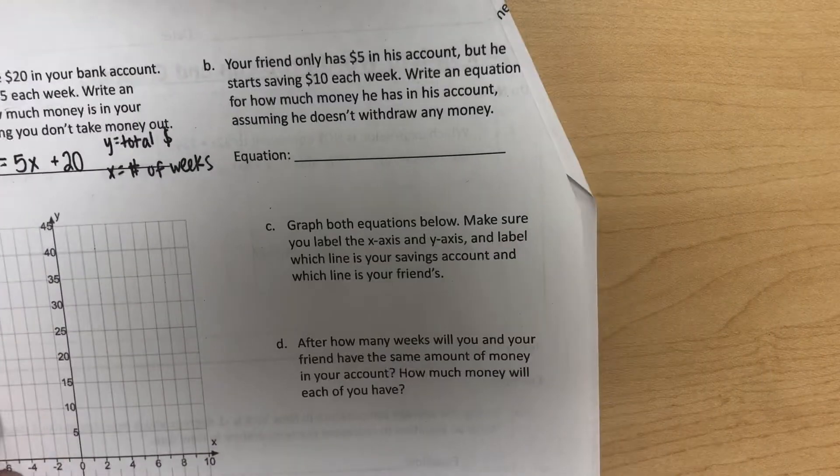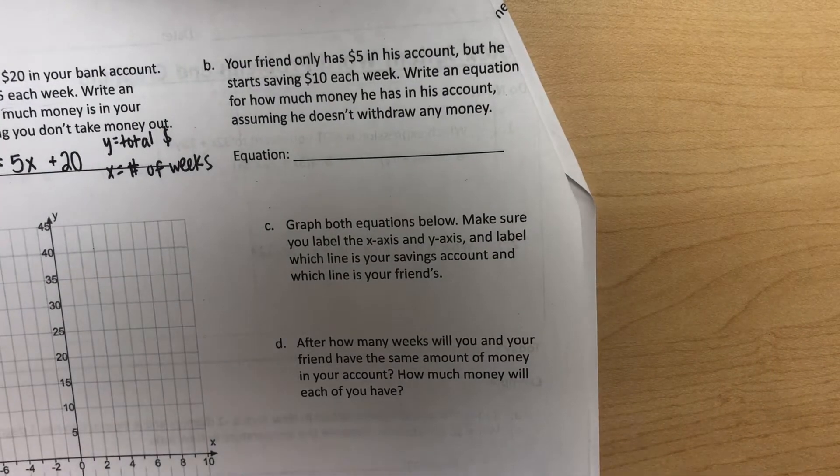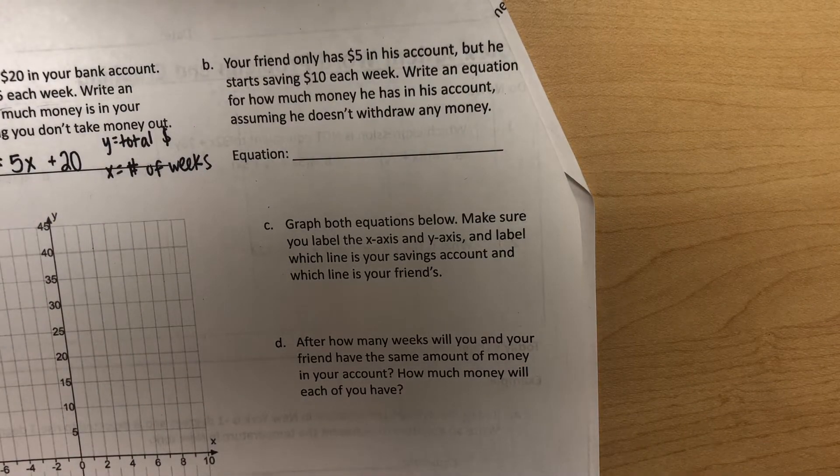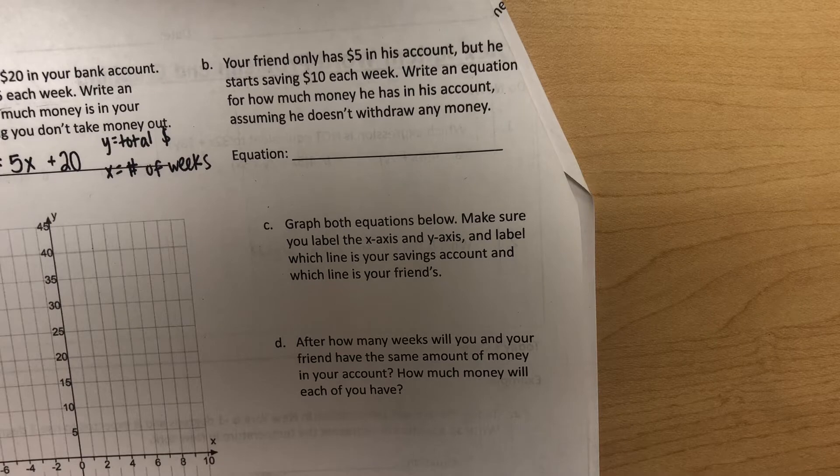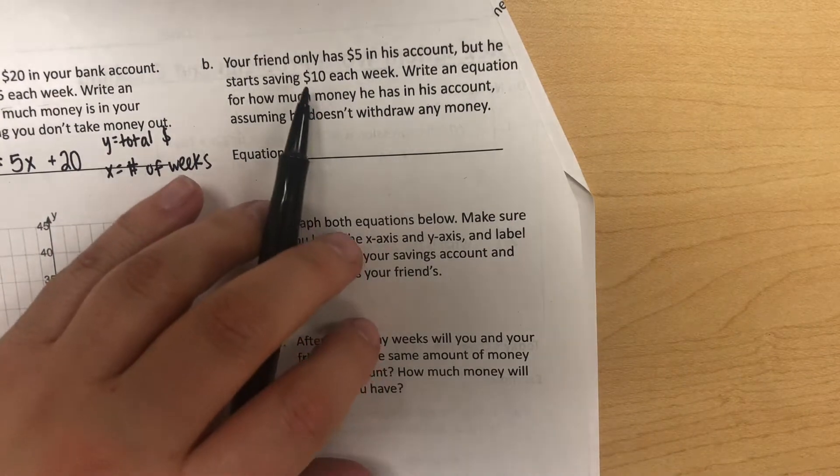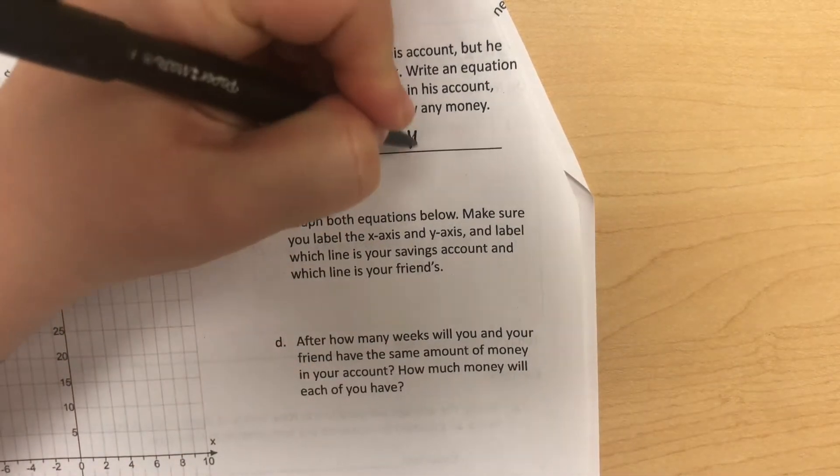For the second part, which is similar, your friend only has $5 in his account, but he starts saving $10 each week. Write an equation for how much money he has in his account, assuming he doesn't withdraw any money. So similar to the first part, our y-intercept, that starting amount—he's starting with $5.